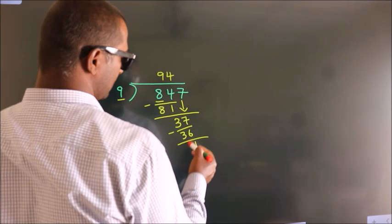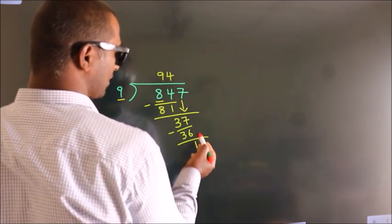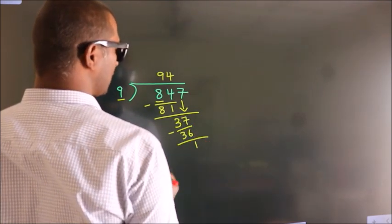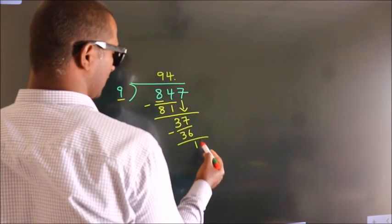After this, no more numbers to bring down. So what we do is, we put a dot and take 0.